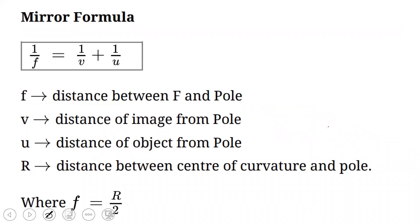This is the mirror formula, used in problems. The formula is: 1/F = 1/V + 1/U, where F is the focal length — the distance between the focus and the pole; V is the image distance — the distance of the image from the pole; U is the object distance — the distance of the object from the pole; and R is the radius of curvature. Also, F = R/2, meaning the focal length equals half the radius of curvature.